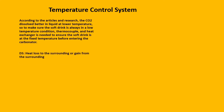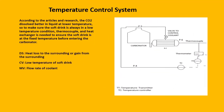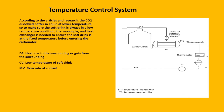According to research, CO2 dissolves better in liquid at low temperature. So, to make sure that the soft drink is always in a low temperature condition, a thermocouple and a heat exchanger are needed to ensure that the soft drink is always at a fixed temperature before entering the carbonator. The control variable during this time will be the temperature of the soft drink, and the manipulated variable will be the flow rate of coolant. There will also be a disturbance variable, which is the heat loss or gain to and from the surrounding. When the temperature of the soft drink increases, the temperature transmitter will send a signal to the comparator in the form of electrical current. The comparator will compare and calculate the error between the set point and the signal received. The controller will give a correct output to the valve for the coolant to increase the flow rate of the coolant and cool down the soft drink to allow CO2 to dissolve better.